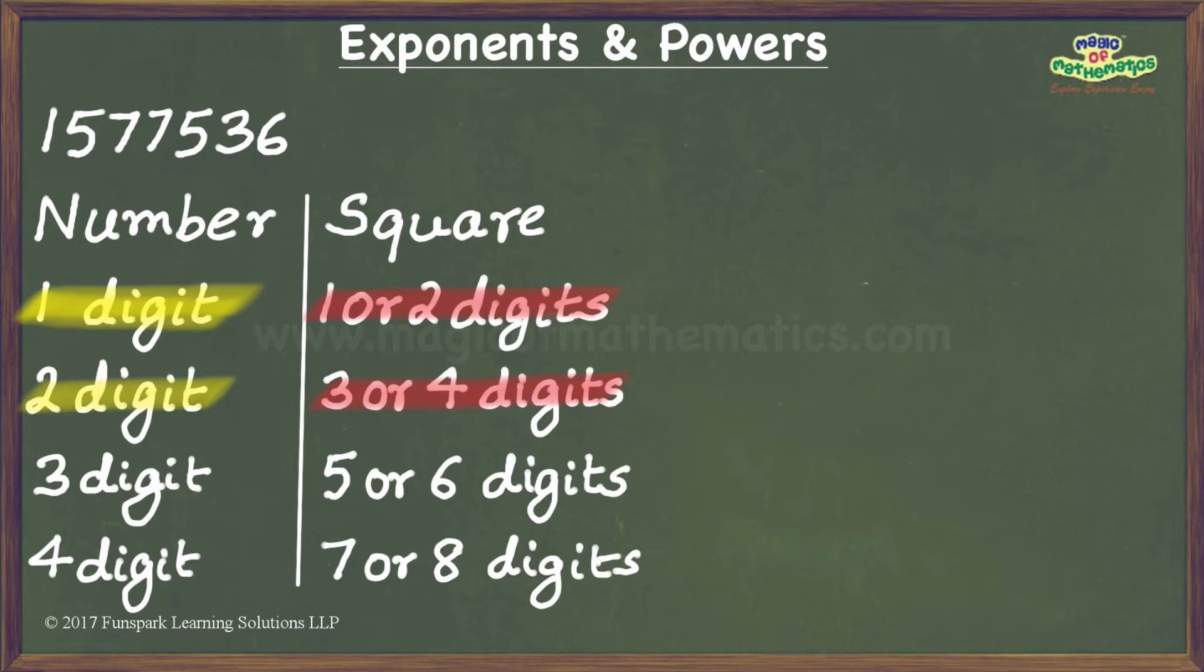Now, let us turn our attention to our perfect square. It is a seven-digit number, and from our table, it is clear that its square root will be a four-digit number. Hence, we have been able to find the number of digits in the square root of our perfect square without finding its square root.